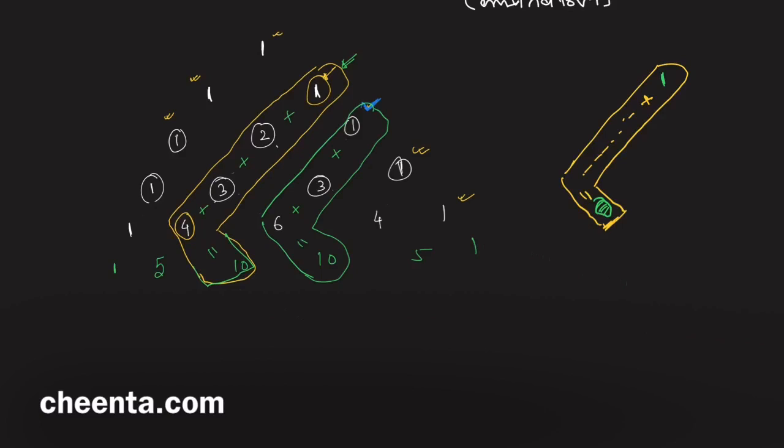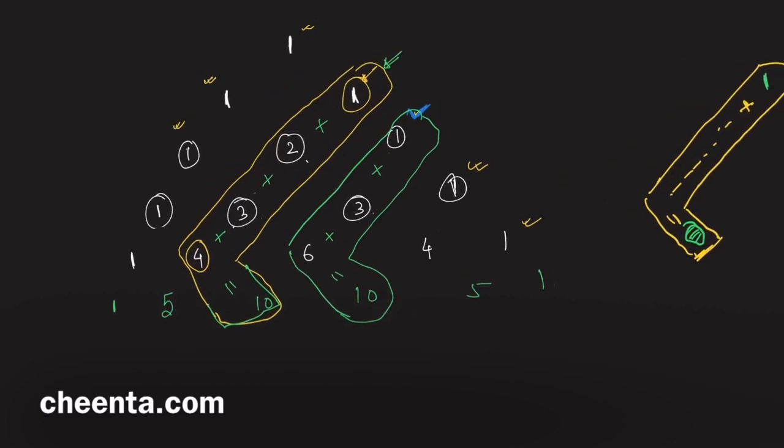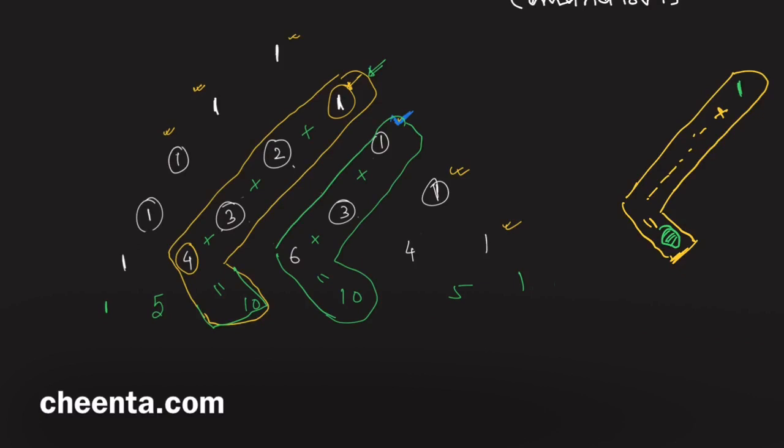This is the hockey stick identity. Of course we have to express this in terms of binomial coefficients. Remember, each of the numbers in Pascal's triangle are also binomial coefficients.